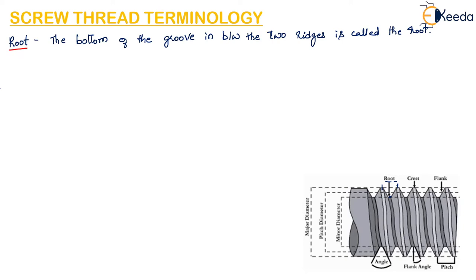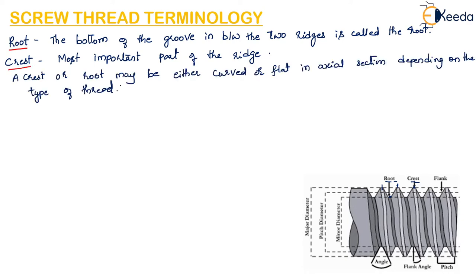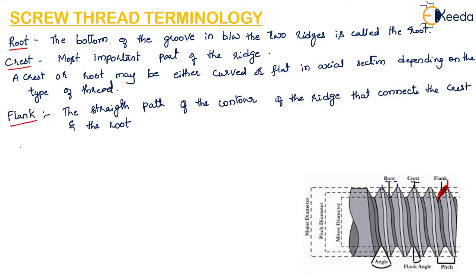The most important part of the ridge is called the crest — that is the tip of the groove. A crest or root may be either curved or flat in axial section depending upon the type of thread. The straight part of the contour of the ridge that connects the crest and the root is called the flank.